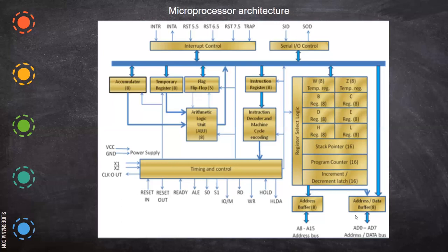The address bus will consist of A0 to A15 — that is 16 address lines. But what happens is the lower-order bits, which is A0 to A7, are also called D0 to D7. The same lines are used for traveling of data, so those 8 lines — the lower-order bits — act as bidirectional. Whereas the remaining higher-order bits from A8 to A15 act as an address bus in a single direction. That is, when you place the data on the address bus, the flow is only towards memory, not back to the internal registers or back to the CPU — that is why it is unidirectional.